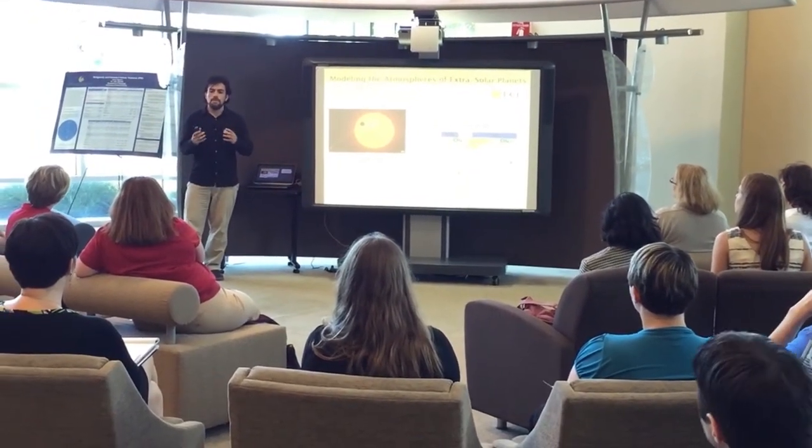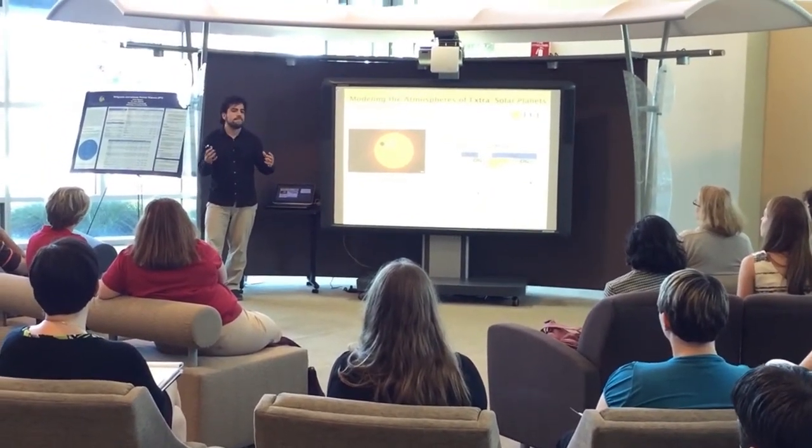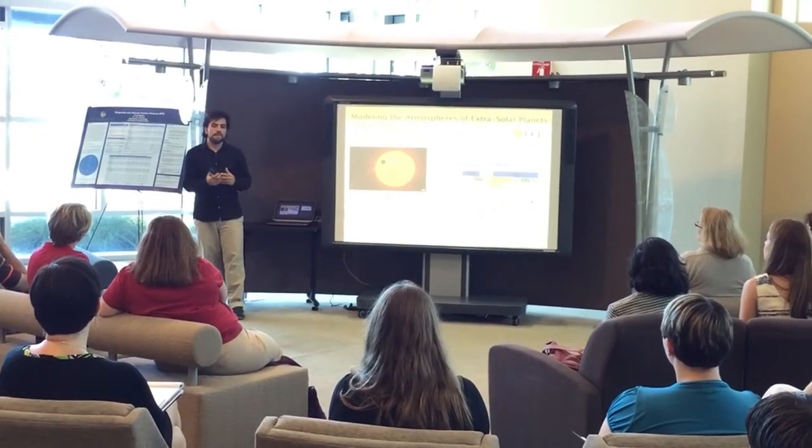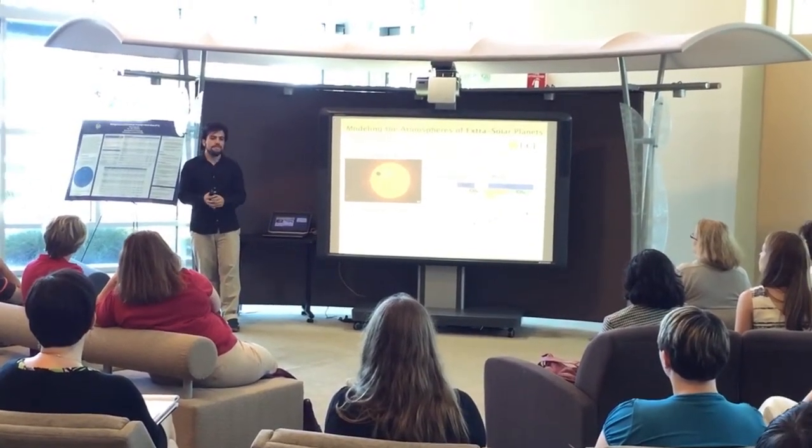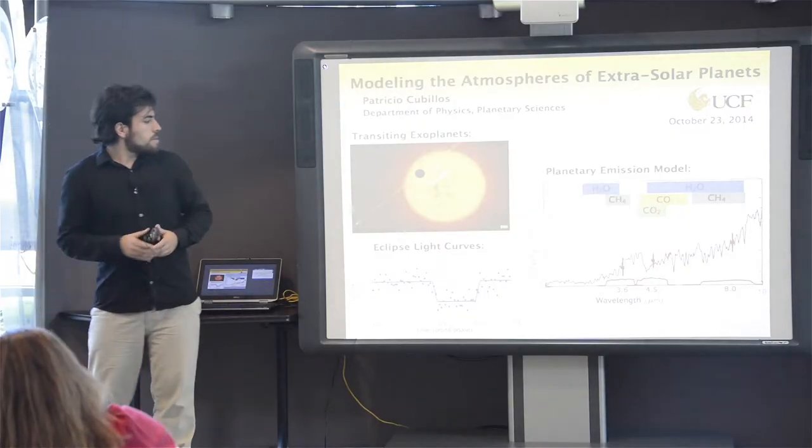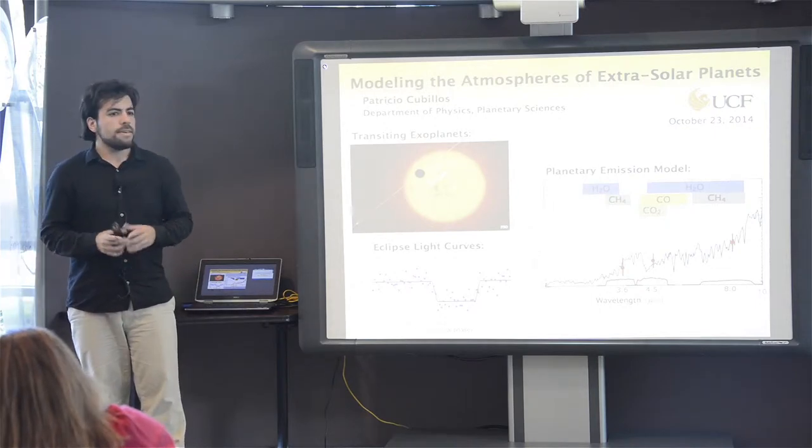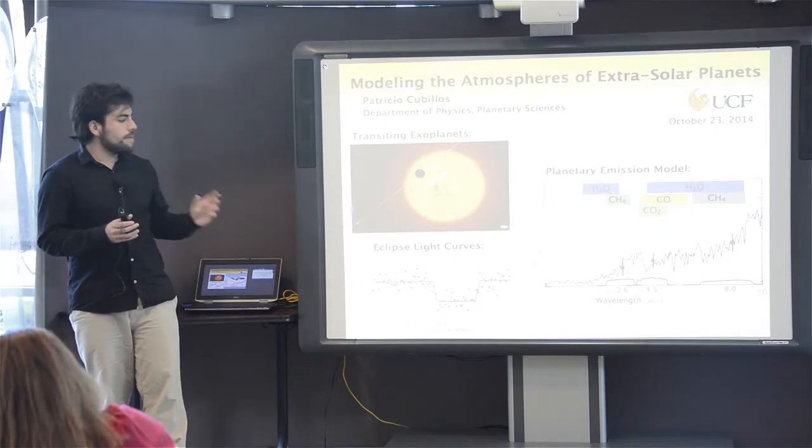In that way we can compare the emission from the planet to the observations. The key factor here is that we observe at different wavelengths in the spectrum of the planet. The wavelength is just the different colors that compose light.